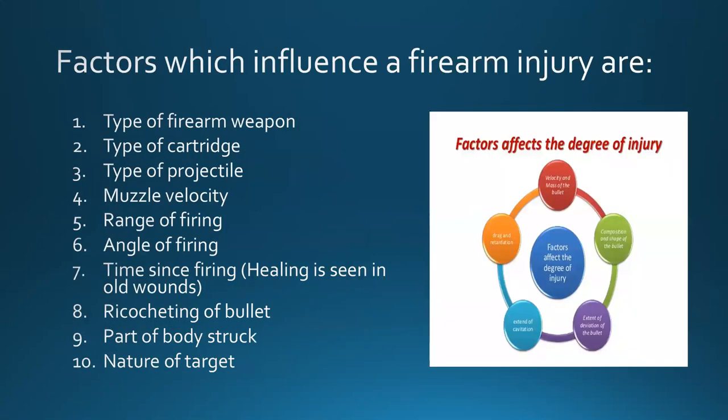The factors that influence a firearm injury are: type of firearm, type of cartridge, type of projectile, muzzle velocity, range of firing, angle of firing, time since firing (healing can be seen in old wounds), ricochet of bullet, part of body struck, and nature of the target. Of all these factors, the most important are range of firing and type of firearm.